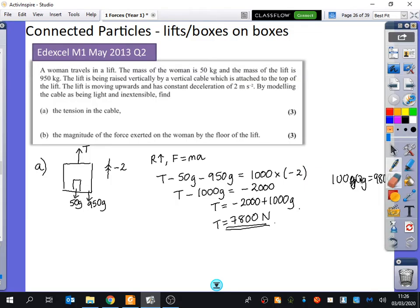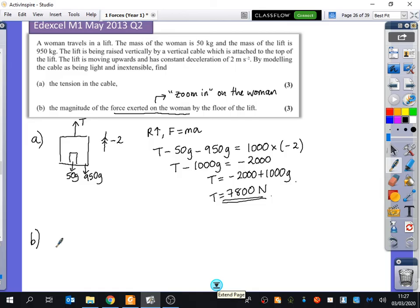So here comes the bit that's maybe a little bit different, but you've all been inside a lift before, so this should be fine. We're now going to try and find out the magnitude of the force exerted on the woman by the floor of the lift. So what we're going to do here is we're going to zoom in on the woman. We're no longer looking at the whole scenario anymore of the entire lift. We're actually interested in what does the woman feel that is happening to her inside the lift. So I'm going to draw now just a picture of the woman standing on the floor of the lift.